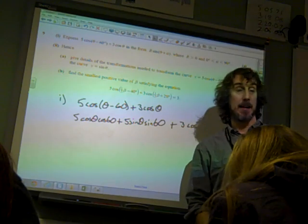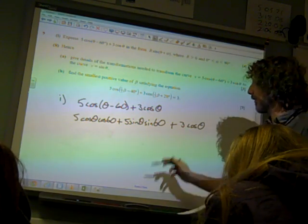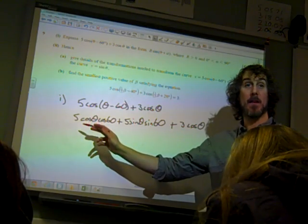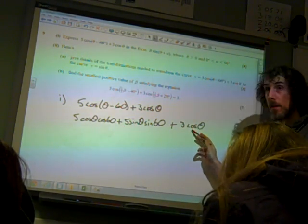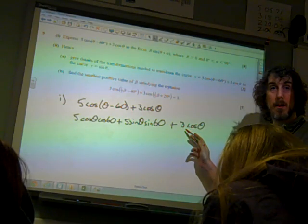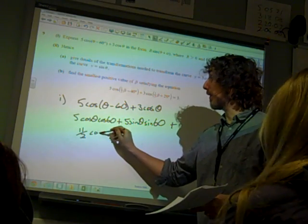Now cos 60 is a half, so if we add up the cos θ's, we've got 5 times a half plus another 3. So that's 2 and a half plus 3, so that's 5 and a half, so that's 11/2 cos θ.